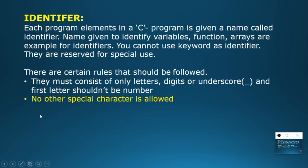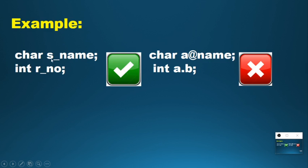The second rule is: no special characters are allowed except underscore. The compiler will accept 'char s_name' but will not accept 'char a@name'. Other than underscore, any special characters are not accepted. For example, 'int r_number' is accepted but 'int a.b' is not, as even a dot is not accepted.